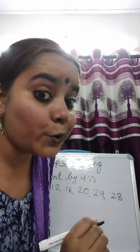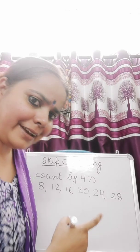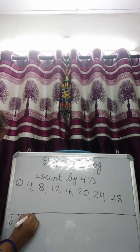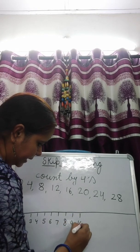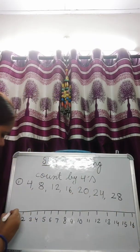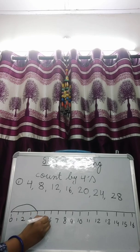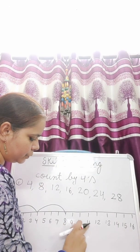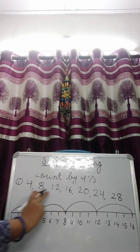This skip counting by fours I am going to show you on a number line also. The number line goes from one to sixteen. I will start from zero, skip three numbers and move to number four. Then from four, skip three numbers — five, six, seven — and move to eight. Then skip three numbers — nine, ten, eleven — and move to twelve. Then skip three more and move to sixteen. This is count by fours.